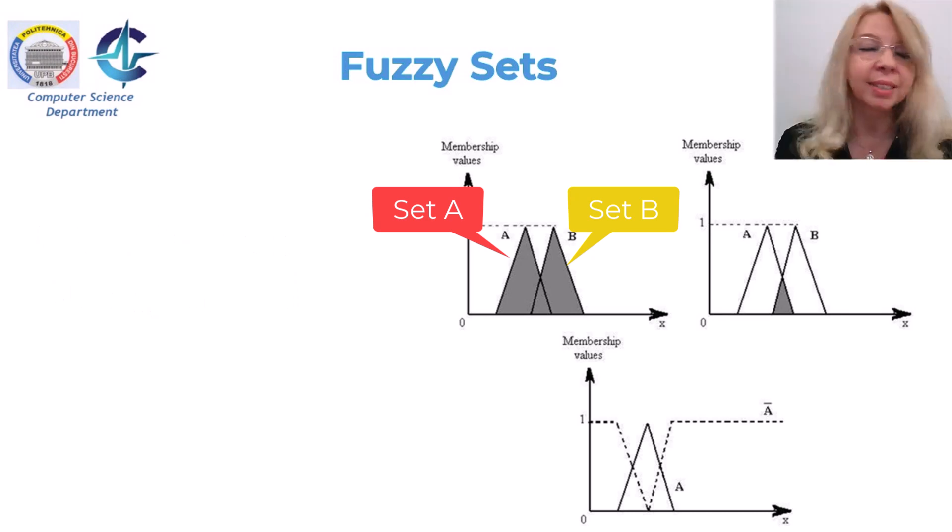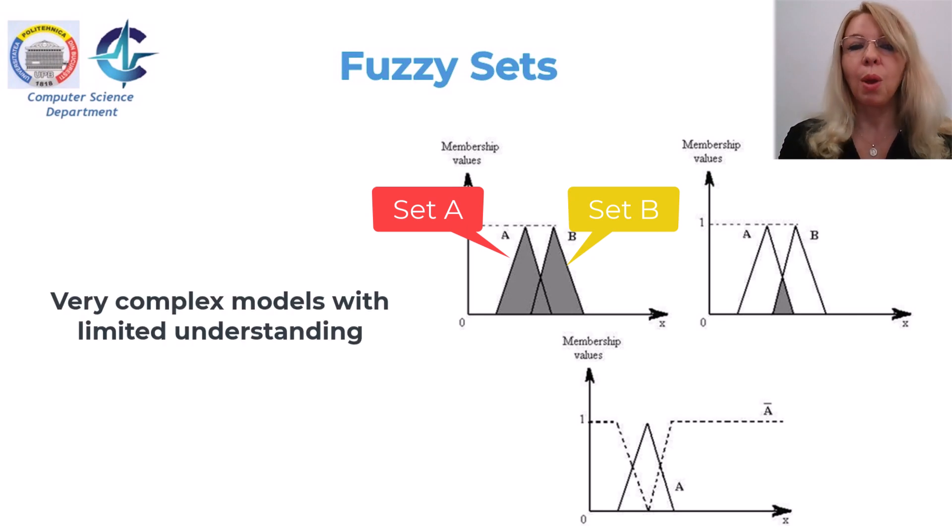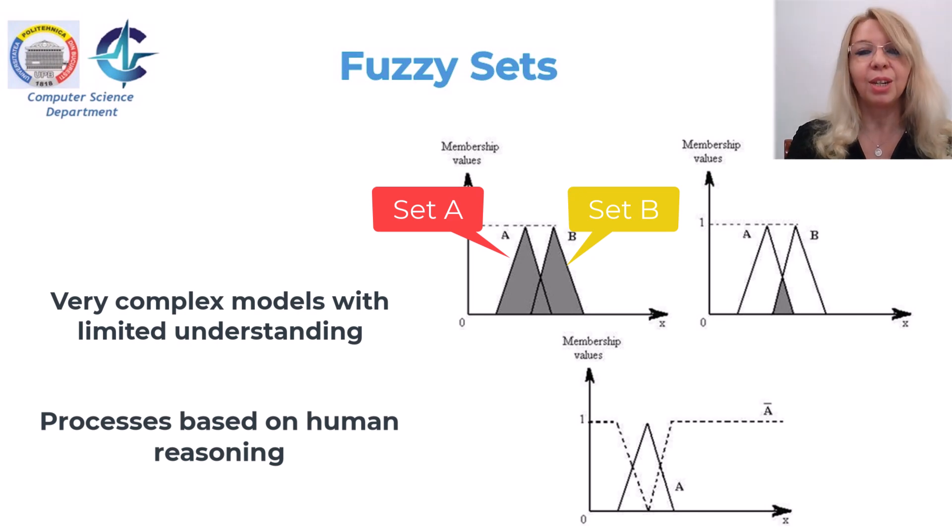Fuzzy logic is most successful in two kinds of situations. One: in very complex models where understanding is strictly limited or judgmental. And the second one regards processes where human reasoning, human perception, or human decision-making are involved.